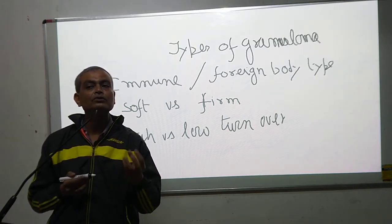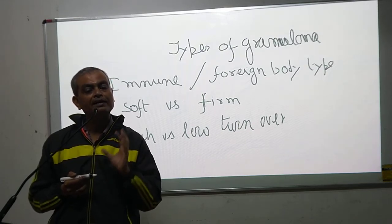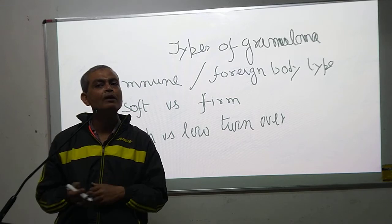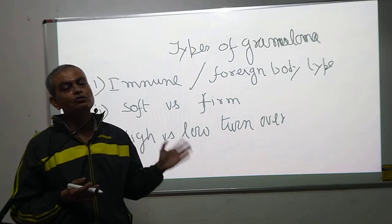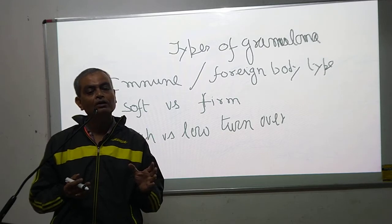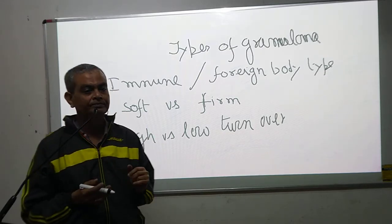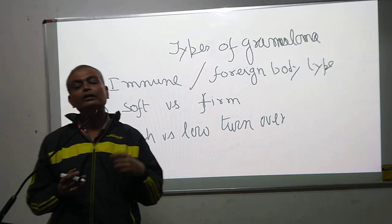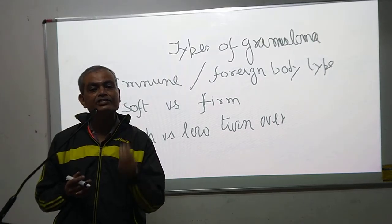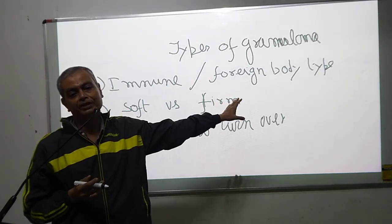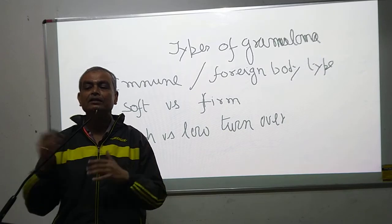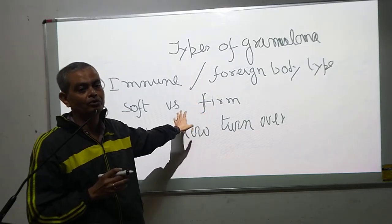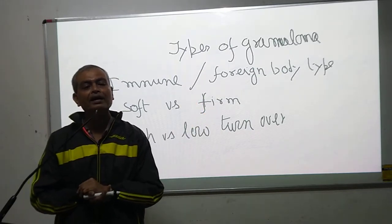When caseation necrosis is present, the granuloma will become soft. Whenever caseation necrosis is not present, the granuloma is mainly formed by cells, so it will become firm. A classical example: tuberculosis is usually a soft granuloma, whereas sarcoidosis is usually a firm granuloma. Then low granuloma versus high granuloma: in low granuloma there will be less destruction of cells, whereas in high granuloma there is destruction of cells as well as new infiltration of cells. So that is our immune granuloma.